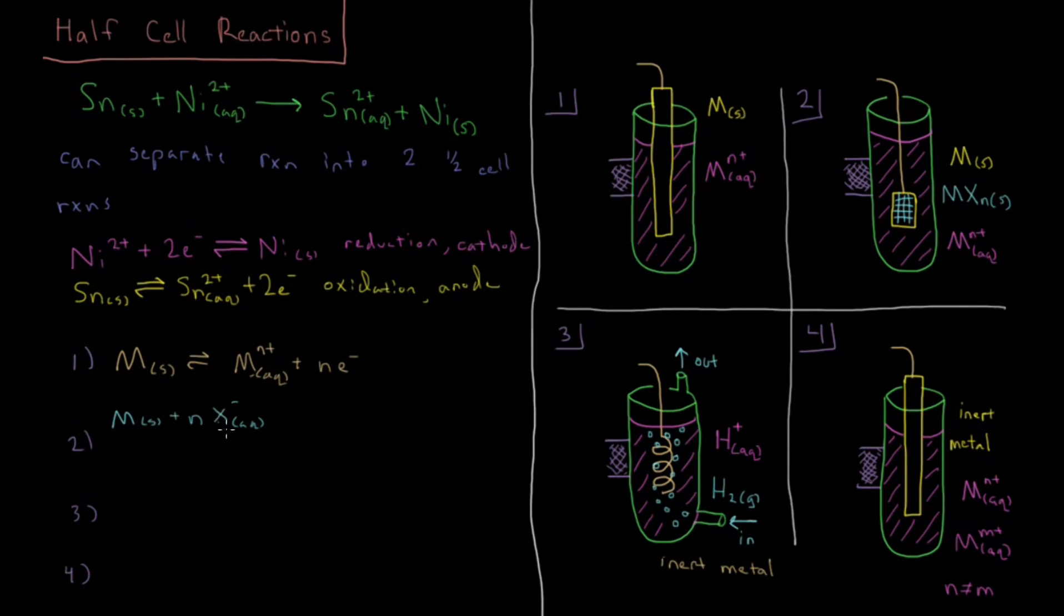But it could be some other ion, it could be some other charge, but this is the type of example that I'm going to be given here. And that goes to the metal salt plus n electrons. And this actually occurs in two steps.